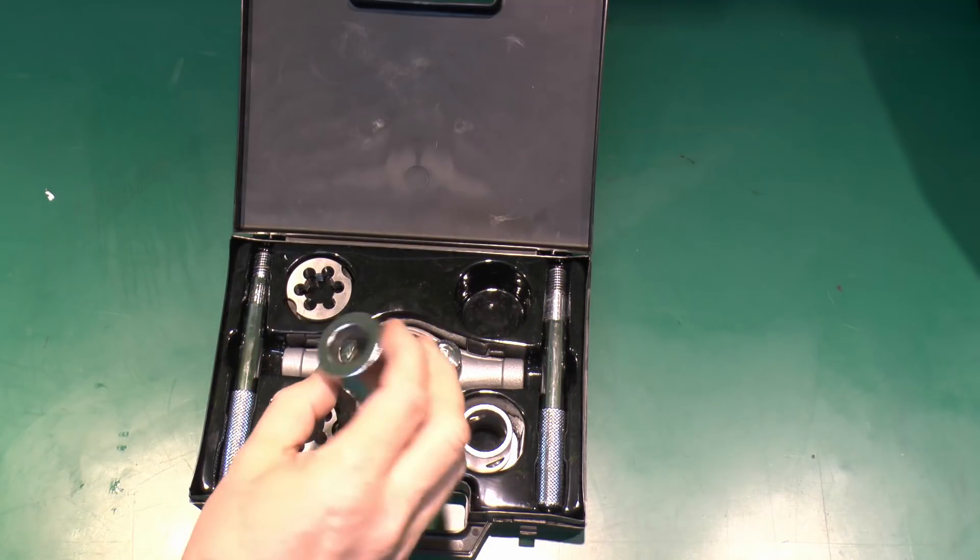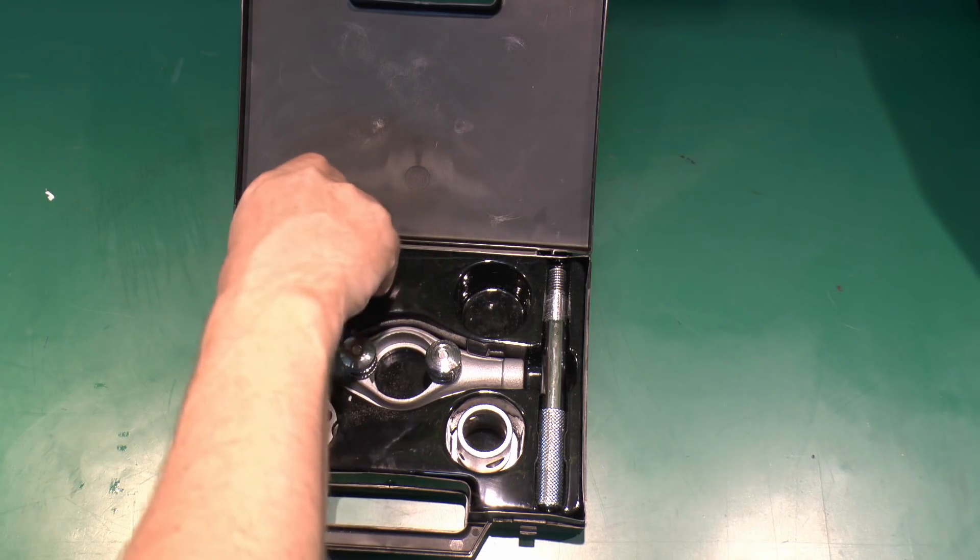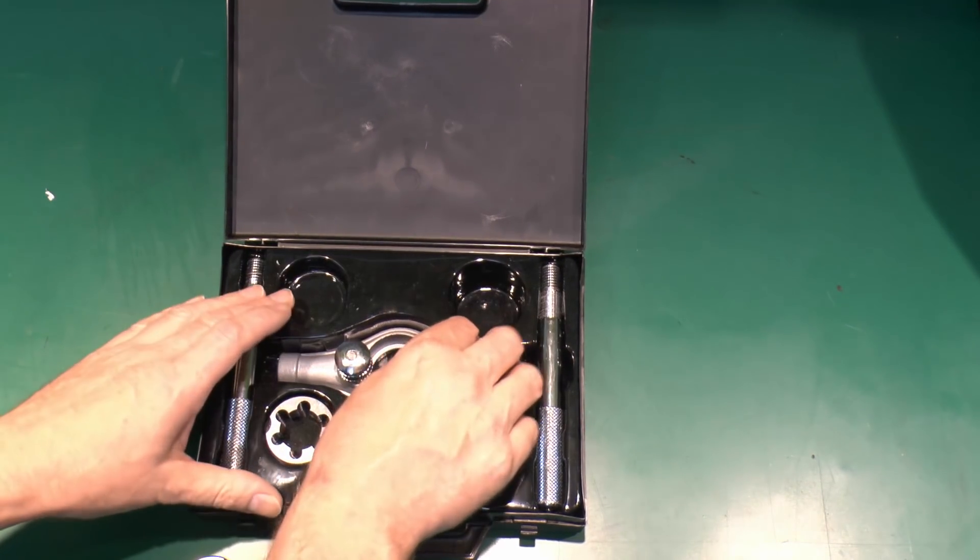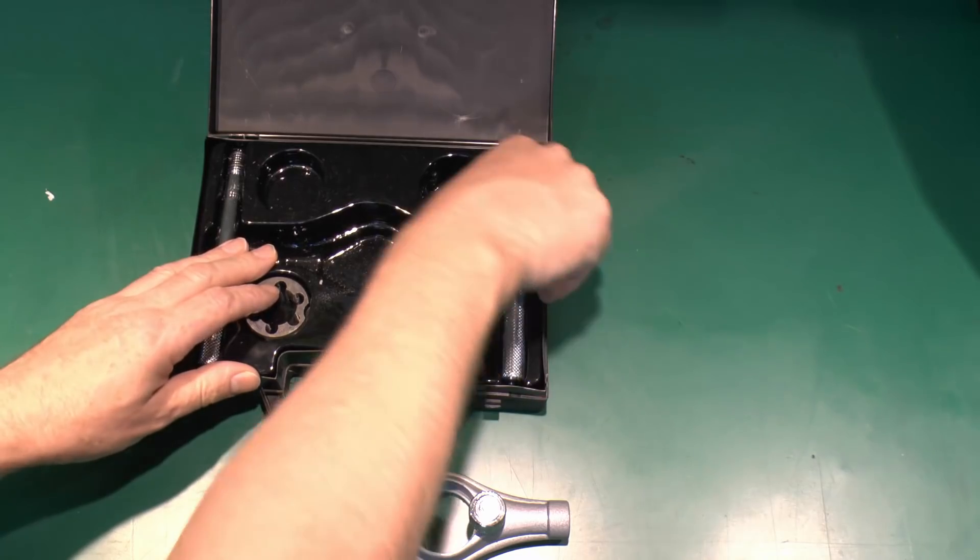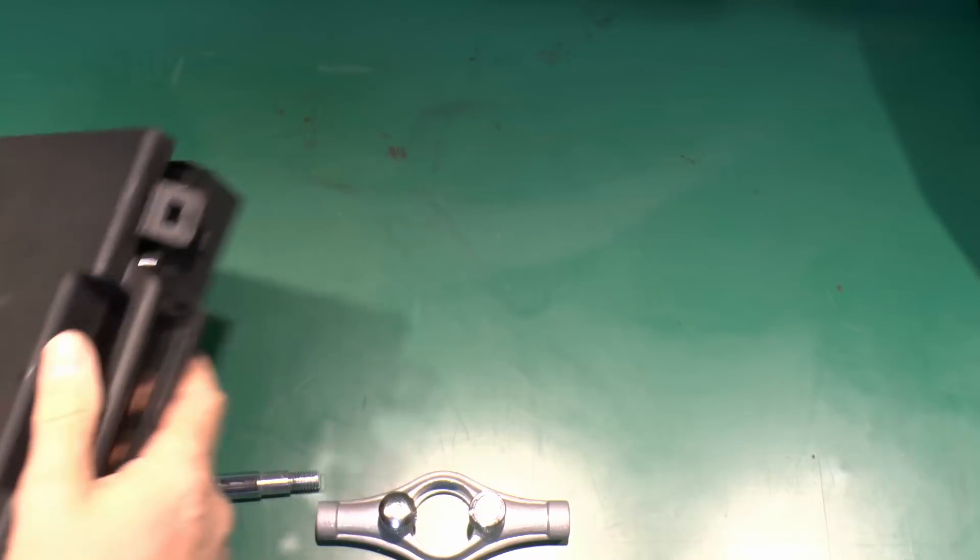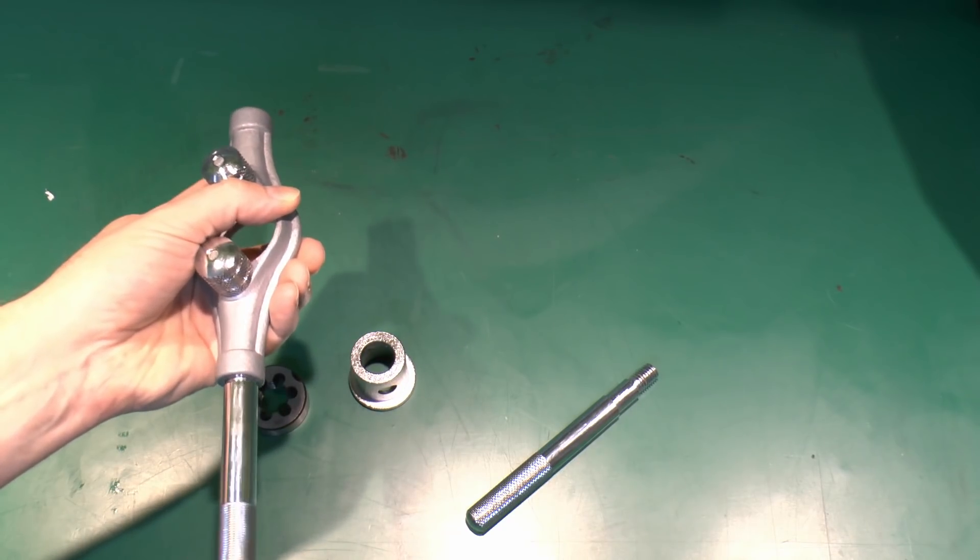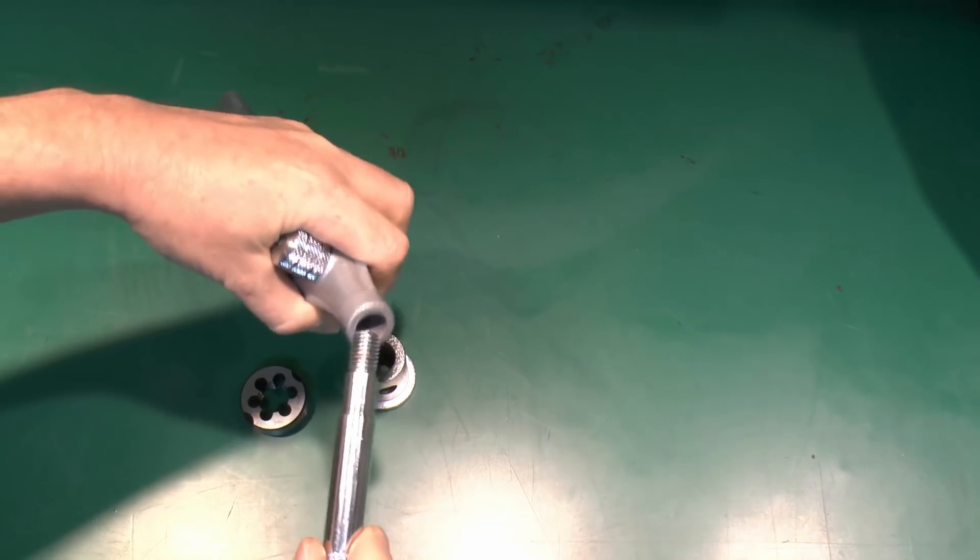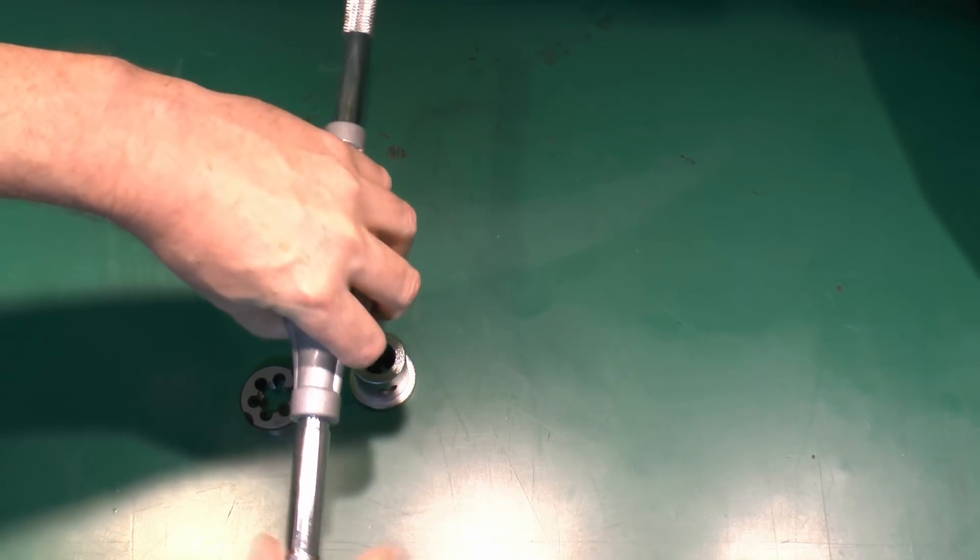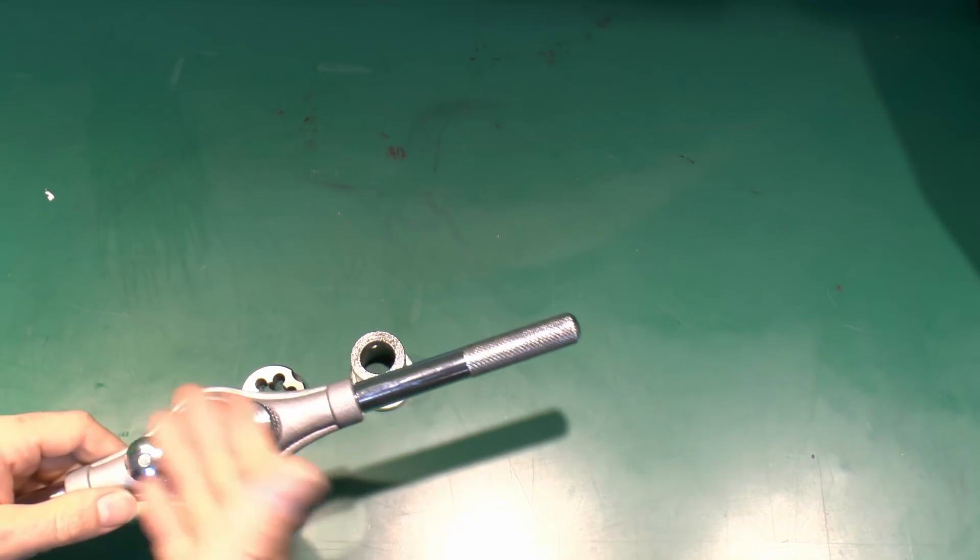We've got various parts here. This is the guide, which just makes sure it's straight. We have the actual cutting die here, the central part of that, and then the two handles, which in this case are separate so it can fit in a small case. In terms of assembling these, the handles simply screw into the ends like that. And the other handle is exactly the same.